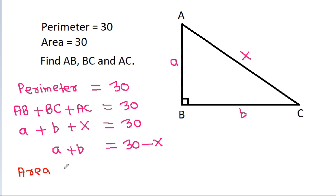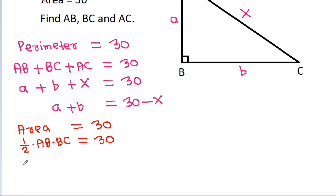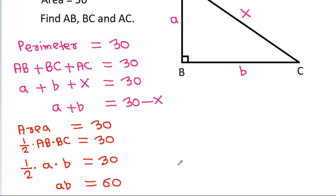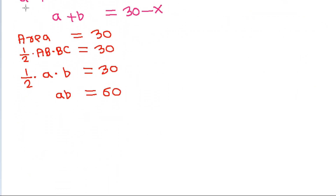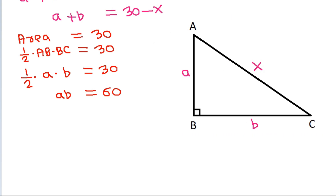The area is 30, and area equals one-half times AB times BC, that is 30. So one-half times A times B equals 30, which means AB equals 60.